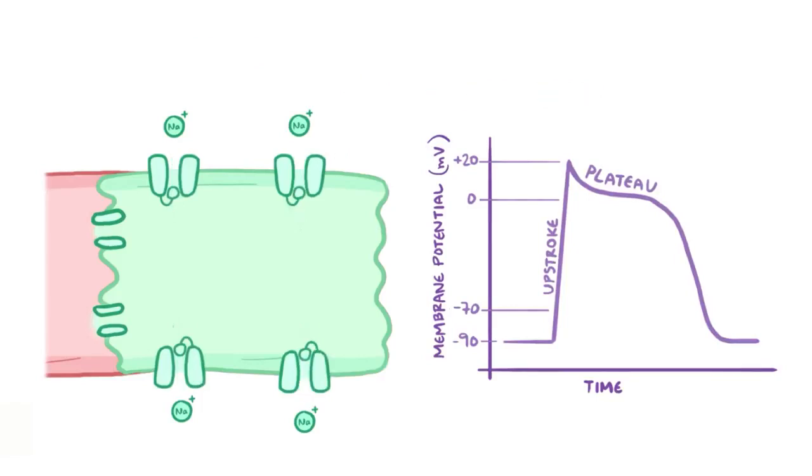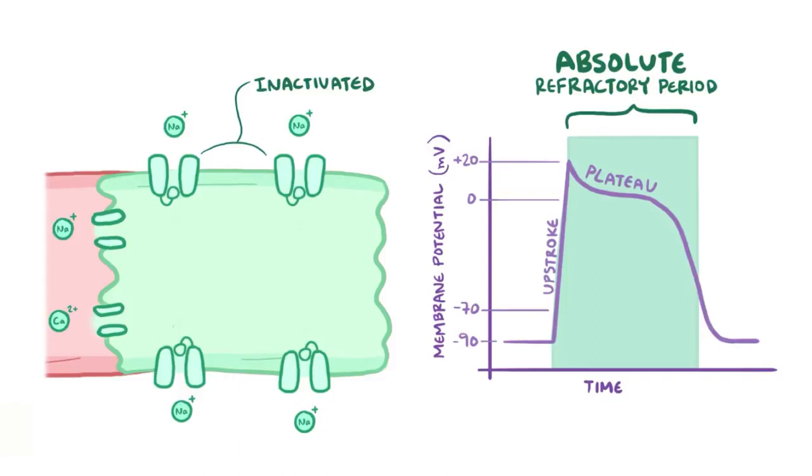During most of that action potential, the myocyte's unable to depolarize again, and this is called the absolute refractory period. In other words, during the absolute refractory period, pretty much all of the myocyte's sodium channels are inactivated, so even if a bunch of inward current comes from the neighboring cell, it literally cannot depolarize.